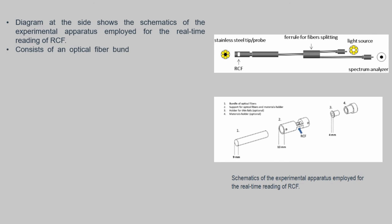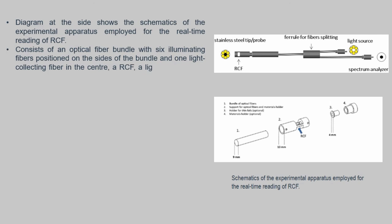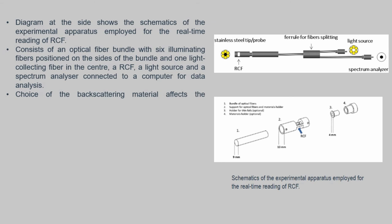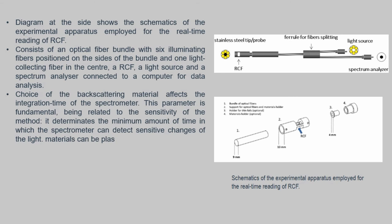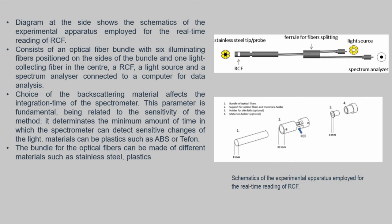The diagram shows the schematic of the experimental apparatus employed for the real-time use of the radiochromic film (RCF). It consists of an optical fiber bundle with 6 illuminating fibers positioned on the side of the bundle and 1 light-collecting fiber in the center, the RCF, a light source, and a spectral analyzer connected to a computer for data analysis. The choice of the best scattering material can affect the integration time of the spectrometer — a parameter fundamental to the sensitivity of the system. The material can be plastic such as ABS, while the bundle of optical fibers can be made of different materials such as stainless steel or plastic, which have less scattering with ionizing radiation.